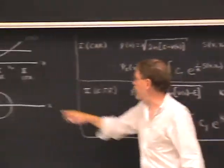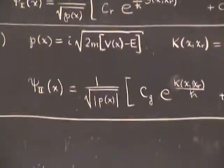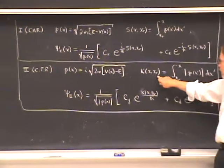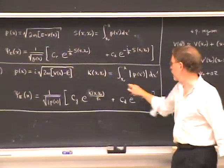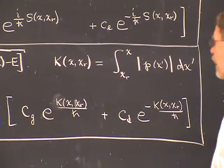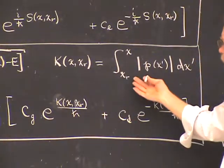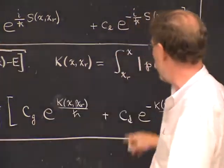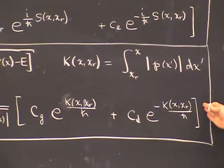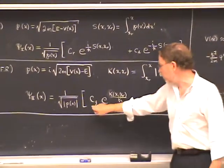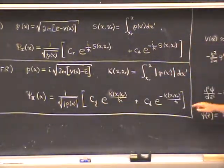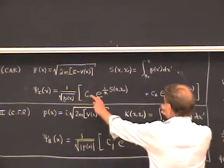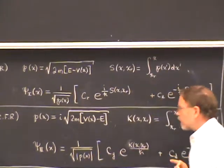In the classically forbidden region, which is labeled number 2, the momentum is purely imaginary. Taking its absolute value means dropping the i and dealing with this positive square root. We define a modified action K, which is the integral of the absolute value of p of x dx. The lower limit, again using the right turning point XR, determines normalization and phase of the wave function. We form a linear combination with the two WKB solutions—a growing one and a damping one—with coefficients C growing and C damping. The problem is to connect C right and C left in the classically allowed region with C growing and C damping in the classically forbidden region.